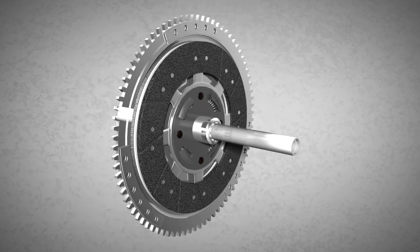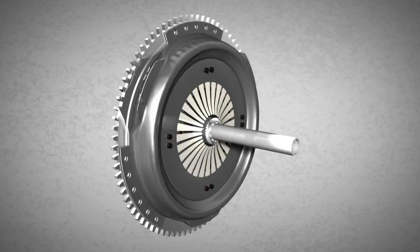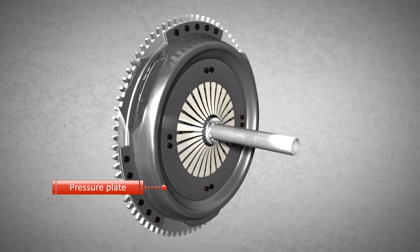The pressure plate is needed for engaging and disengaging the clutch disc. The pressure plate is riveted to the flywheel. As a result, the pressure plate rotates when the flywheel rotates.